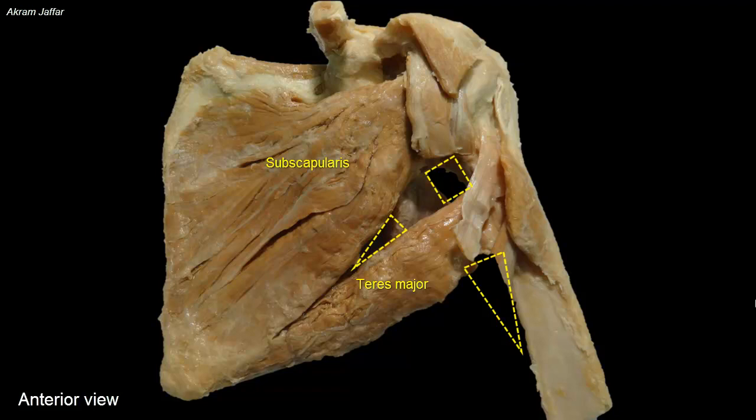The quadrangular space lies between subscapularis and teres major. Medially is the long head of triceps, attached to the infraglenoid tubercle of the scapula, and laterally is the humerus — specifically the region of the surgical neck of the humerus. The continuation of the long head of triceps has been cut from this prosection, so I will sketch it back.